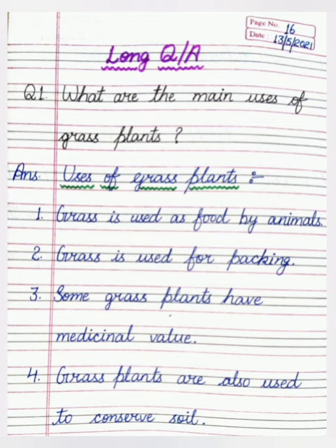Third point: some grass plants have medicinal values and are used to make medicines. Fourth point: grass plants are also used to conserve soil — grass plants ko soil ko protect aur conserve karne ke liye bhi use kiya jata hai. I hope you are all clear with these question answers. Write these question answers in your fair notebook in neat and clean handwriting, and also learn the question answers of Chapter 2.